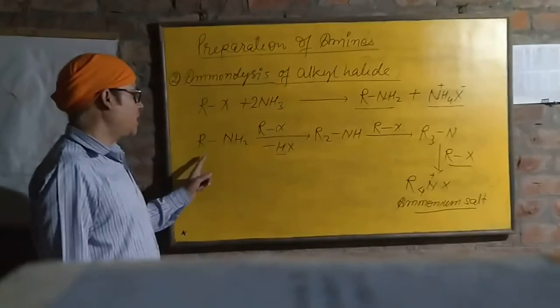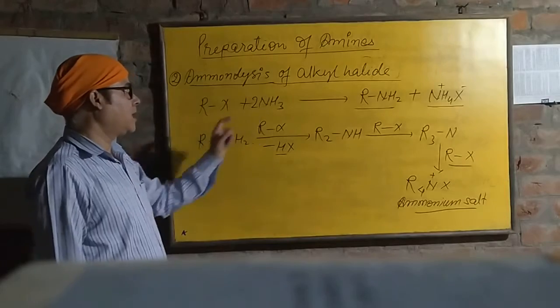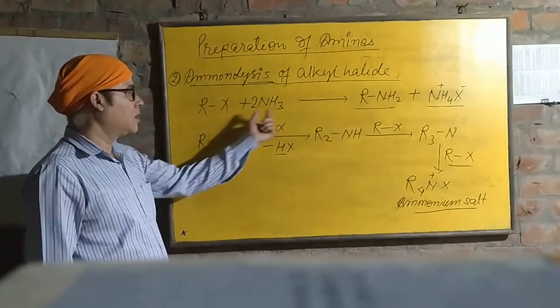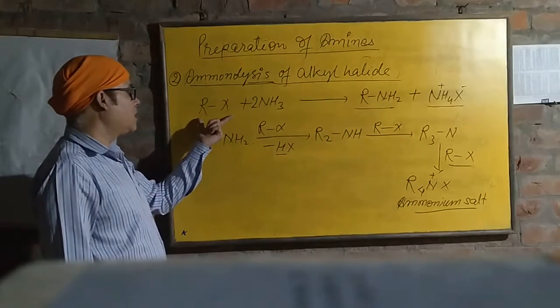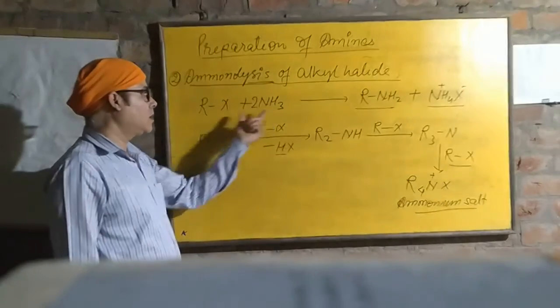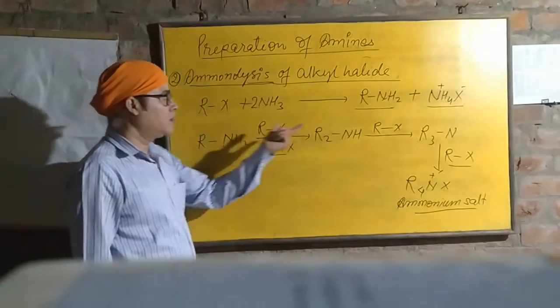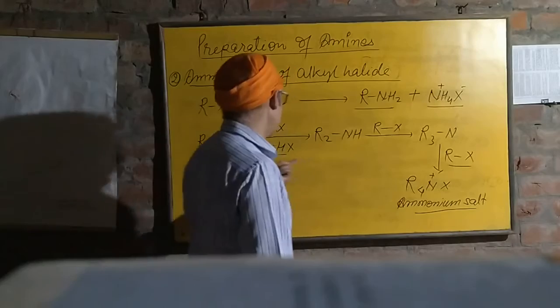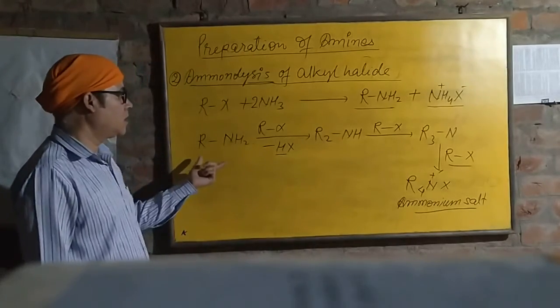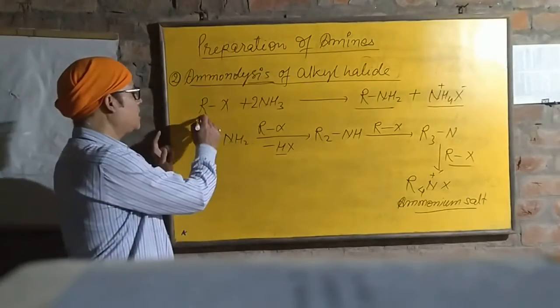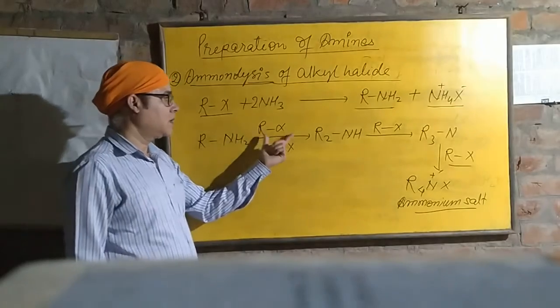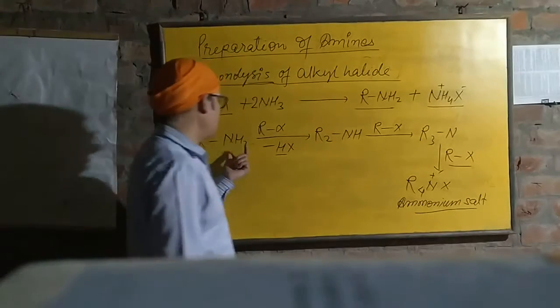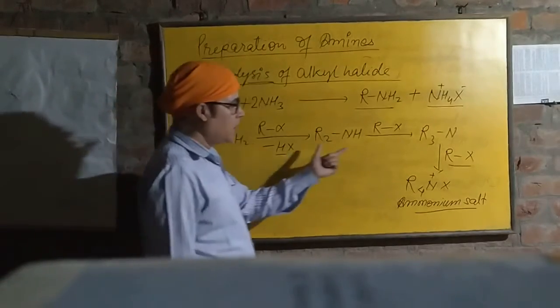This is known as aminolysis. This lysis means breaking of bond with the help of ammonia. You can say, once again, alkyl halide with ammonia. With alkyl halide, we get primary amine, then ammonium salt. And this reaction may continue if alkyl halide is in excess, if all hydrogens are removed from the amine.